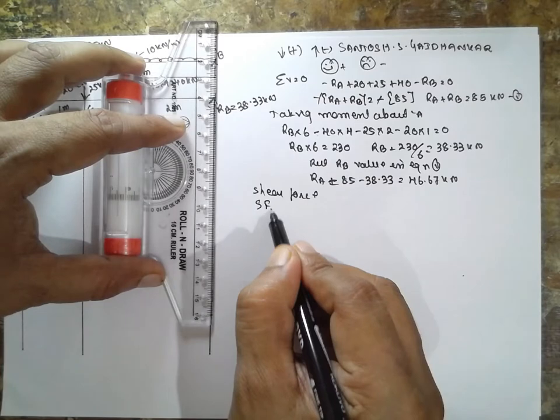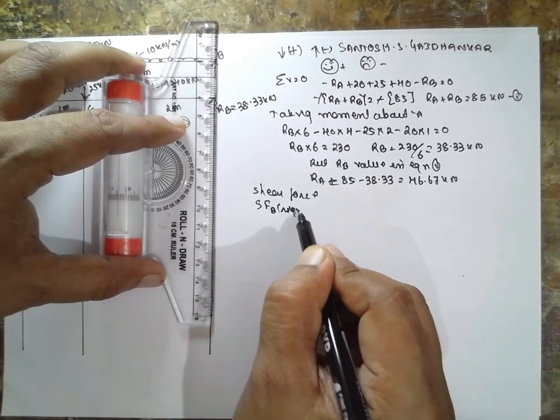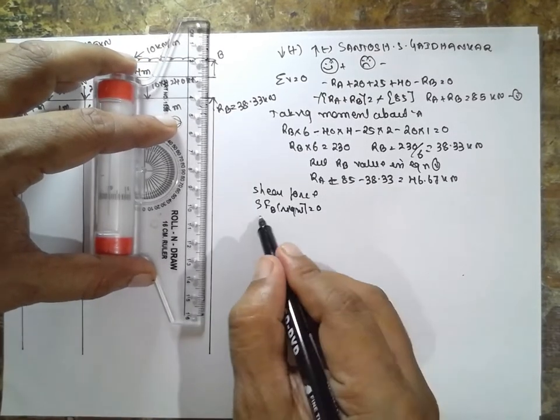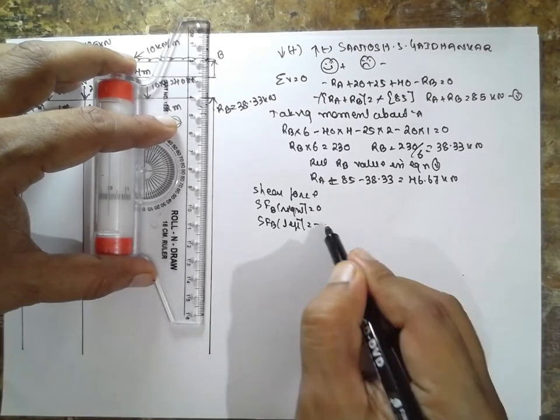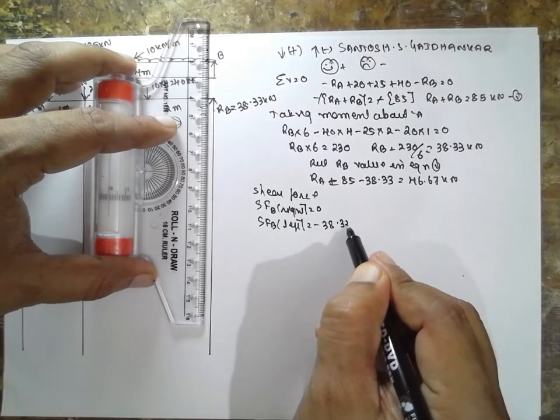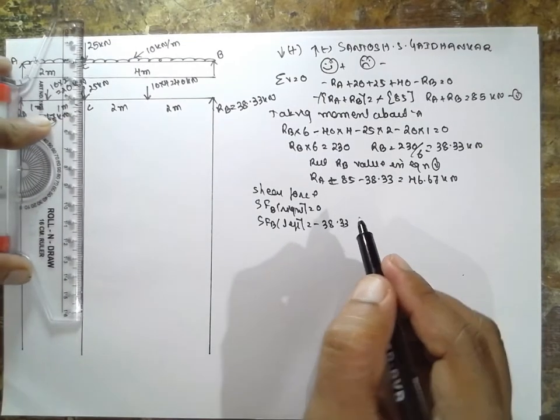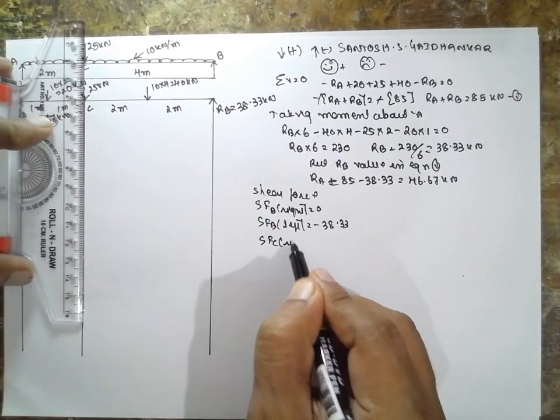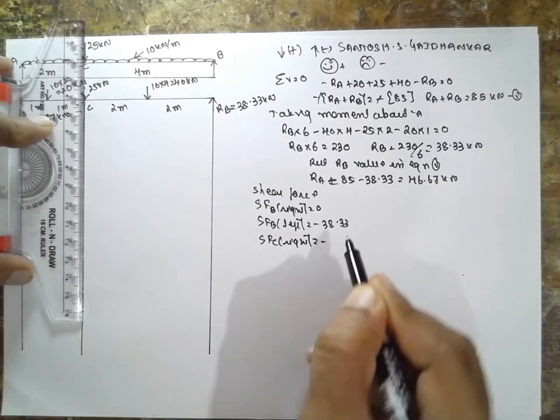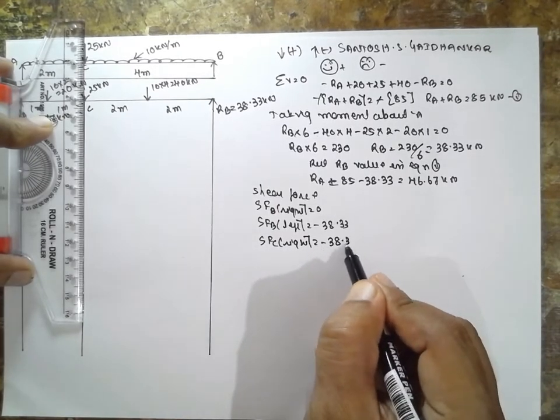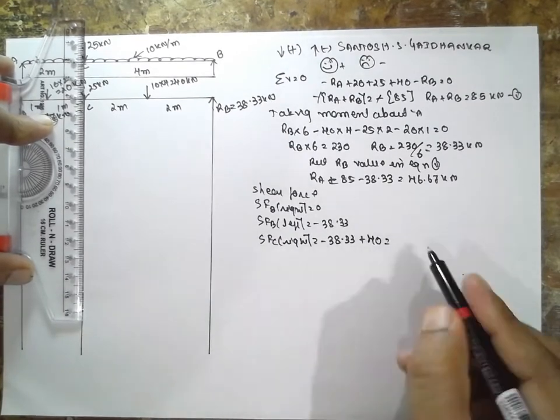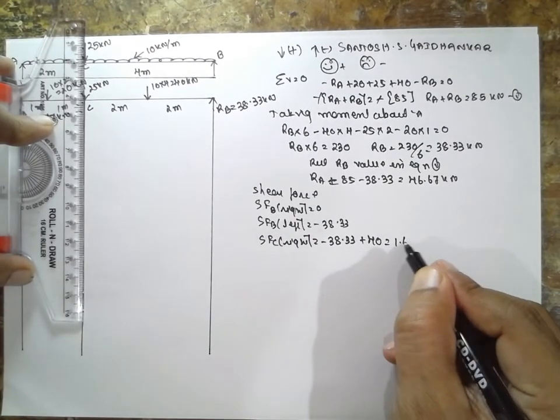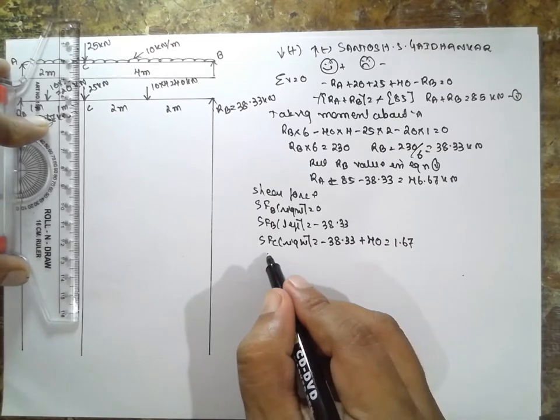SF at B right, 0. SFB on left, minus 38.33 at C, there is a load. SF at C right side, minus 38.33 plus 40, it will be 1.67.